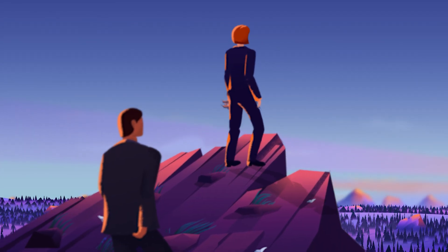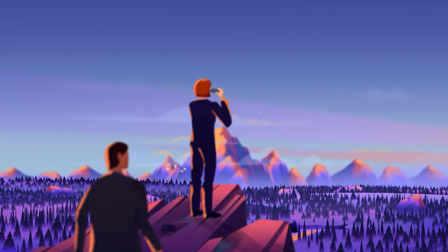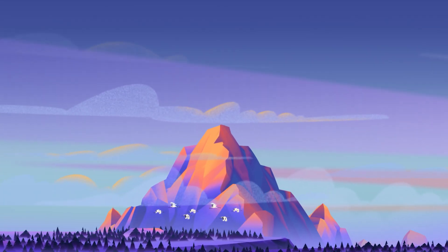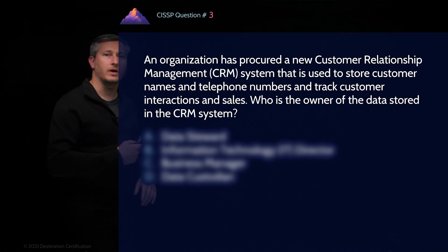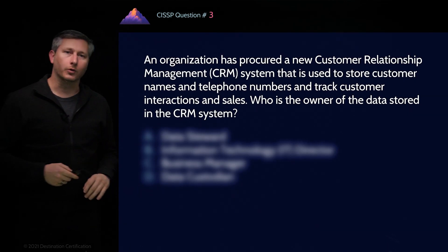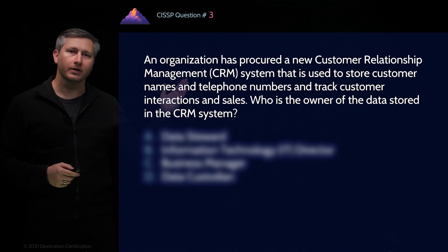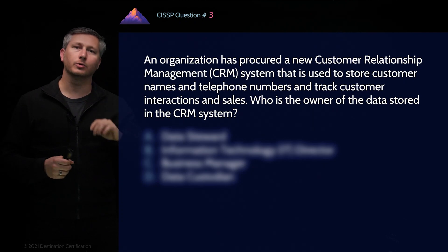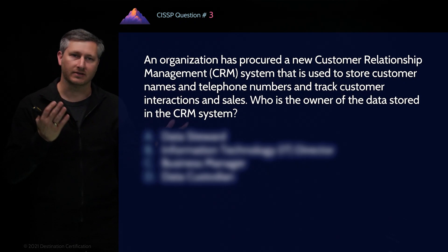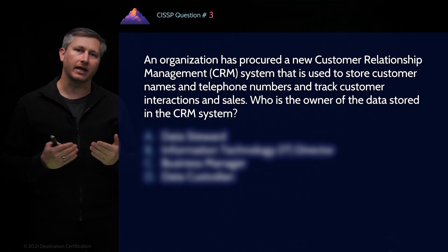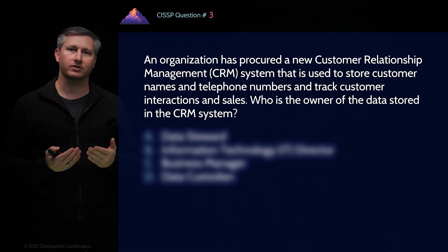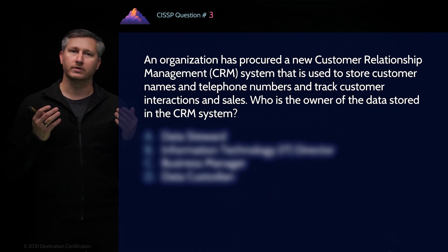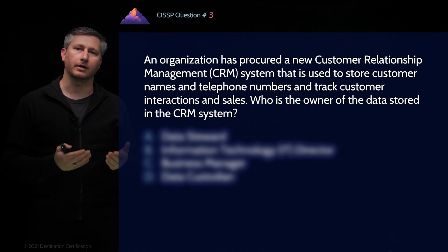Hey, I'm Rob Witcher, and I'm here to help you pass the CISSP exam by teaching you how to correctly read and understand CISSP questions and pick the best answer. Here is today's question: An organization has procured a new customer relationship management CRM system that is used to store customer names and telephone numbers and track customer interactions and sales. Who is the owner of the data stored in the CRM system?